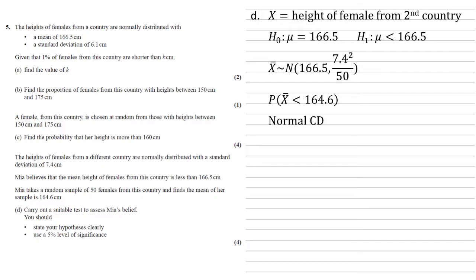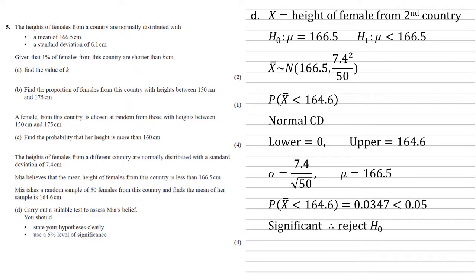To do this, we're going to put it into the calculator. We're going to use the normal cumulative distribution with a lower limit of something suitably small, I've got zero, and an upper bound of the 164.6 that we're working with. Our standard deviation is the square root of our variance, so 7.4 over root 50, and our mu is 166.5 as before. Putting these into the calculator, we get that the probability that X bar is less than 164.6 is 0.0347. This is less than 0.05 from our 5% level of significance. So because it's lower than our level of significance, it is a significant result. So we're going to reject the null hypothesis.